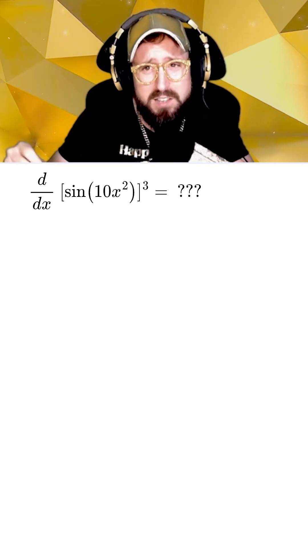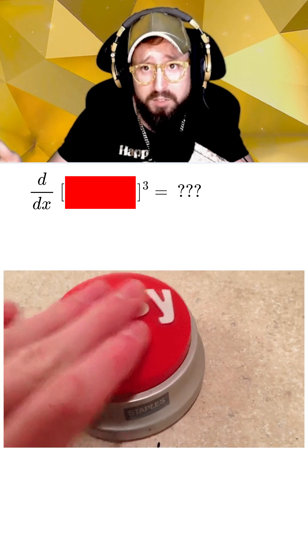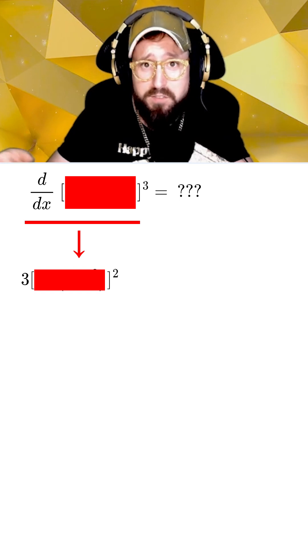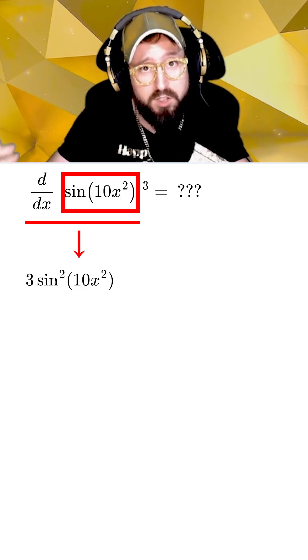In this case, we see that life would be a lot easier if we were just taking the derivative of something to the third. So I'm going to call my box the sine of 10x squared, and then take the derivative. This gives us three times the box to the second, which after plugging back in will be 3 sine squared of 10x squared.